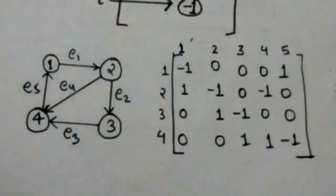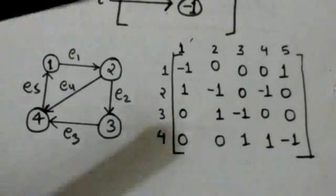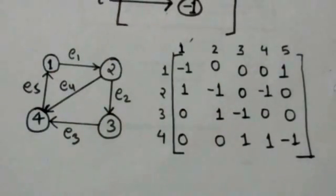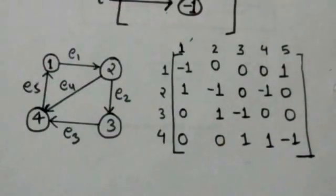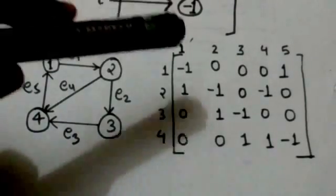There is an arc E1 in this digraph from vertex 1 to vertex 2. So in the incidence matrix of this digraph, the entry at the first row and first column is minus 1, and the entry at the second row and first column is 1.